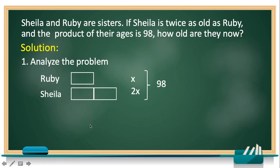Okay, now that we completely analyzed the problem, let's translate it into an equation. What equations are we going to formulate? This one where both their ages are multiplied and the product is 98. So X is multiplied to 2X, which is equal to 98. There we have our equation.